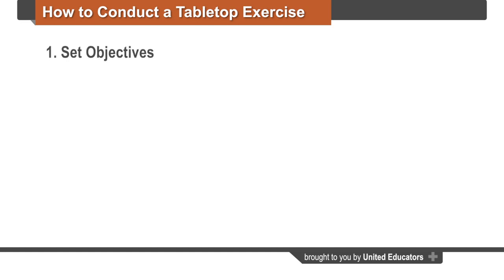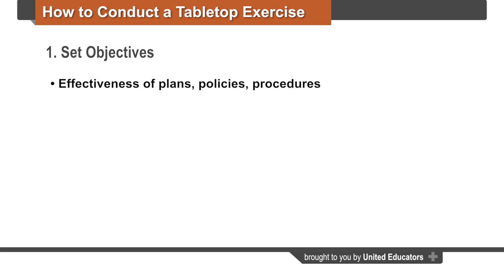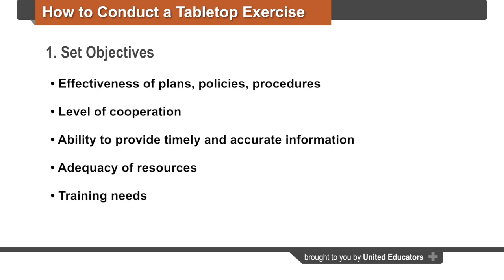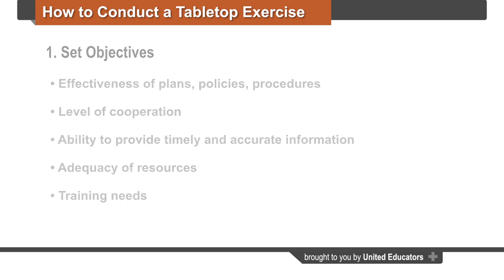First, it is important to set objectives for the exercise. An average tabletop exercise will have between three and eight objectives. These might include determining the effectiveness of your institution's plans, policies, and procedures; identifying the level of cooperation between departments; determining your institution's ability to provide timely and accurate information to the necessary audiences; evaluating the adequacy of resources such as facilities and equipment; and increasing awareness of crisis response procedures and identifying training needs.